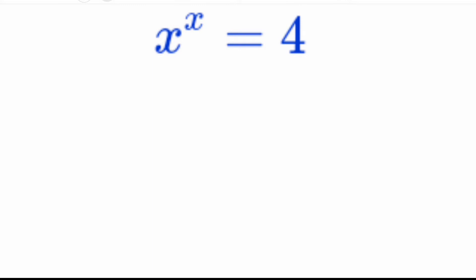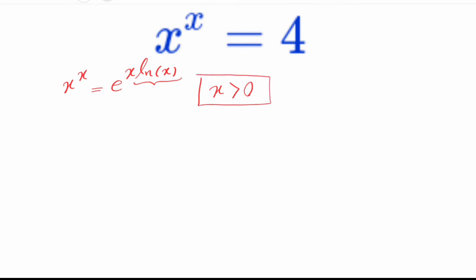Let me remind some well-known results about x to the x. We know that x to the x is defined as e to the x times ln of x, and ln of x is defined only for positive numbers, therefore x must be a positive number.